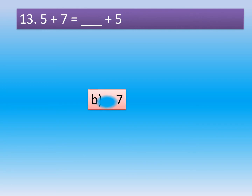The correct option is Option B: 7. 5 plus 7 is equal to 7 plus 5.